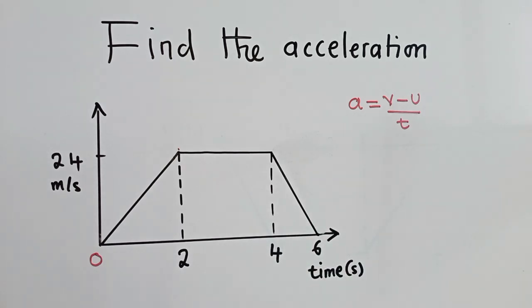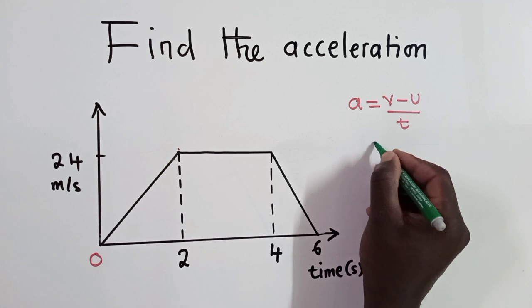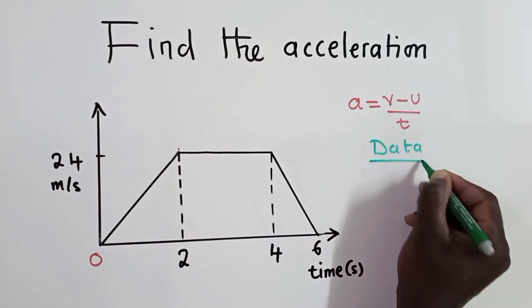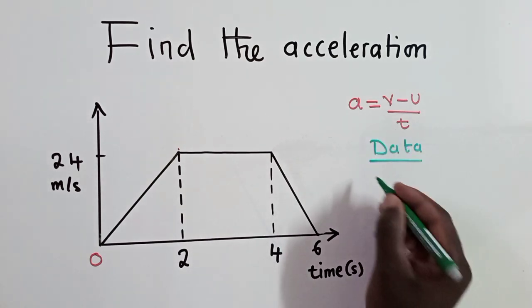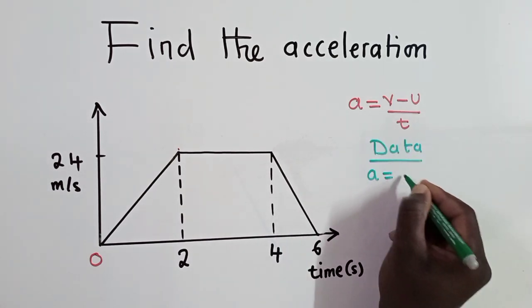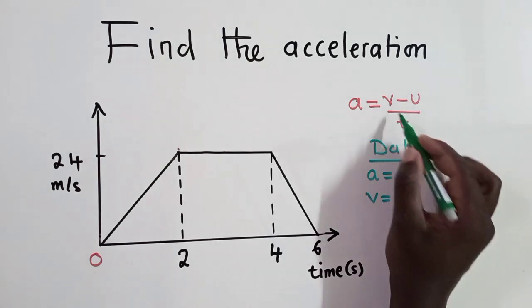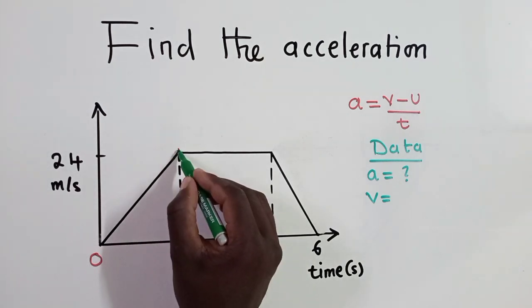So here, after identifying the formula that you're supposed to use, you gather your data. So we're going to say data here. So what is A? A is acceleration. And this is what we are looking for. What about V? V is the final velocity. So final velocity would be right here.